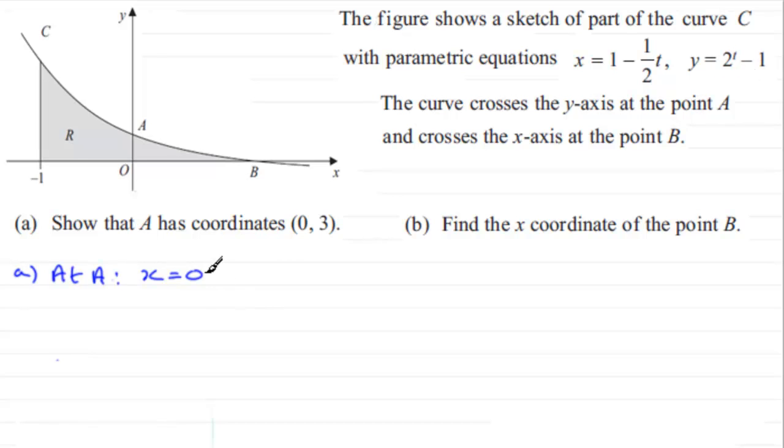So when we put x equals 0 we've got 1 minus a half t equals 0 and if we add half t to both sides we therefore have half t equals 1 and if we now multiply both sides by 2 you end up with t equaling 2.